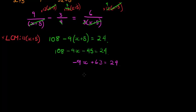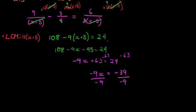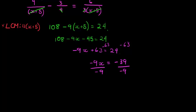And now I've got negative 9X is equal to, subtract 63 from both sides, minus 63. That gives me negative 39. So dividing both sides with my negative 9, I'm sure you are used to doing this by now.